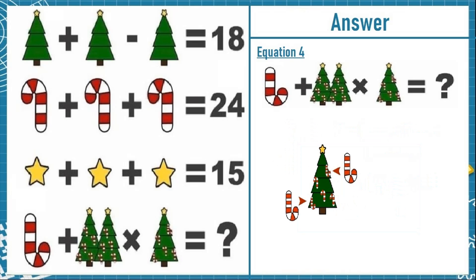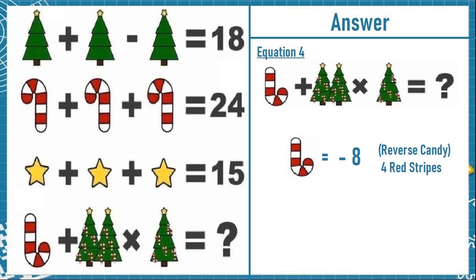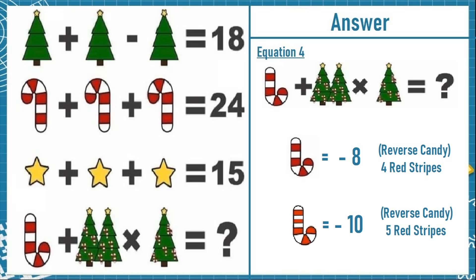Now moving on to the third object in equation 4, which is a tree. This tree has some candies which are also reversed — there are 2 reverse candies and 3 normal candies. Looking closely, the reverse candy has more red stripes than the candy in equation 2 — it has 5 stripes. So a reverse candy with 5 stripes is equal to minus 10.